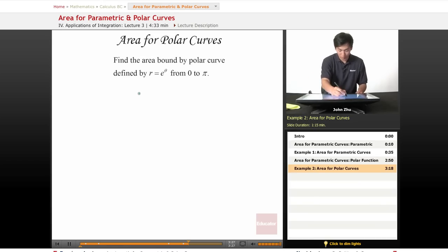we just remember our formula: a equals one-half integral from 0 to pi of e to the theta squared, which is e to the 2 theta d theta.